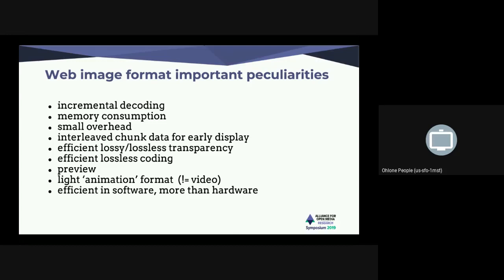We want to be efficient on alpha, because no device can capture alpha — it's a human process. We want to interleave alpha with YUV, and lossless coding is useful too — it's a replacement for PNG. We want preview support in the format, a very light animation format that only needs one buffer for decoding. Most importantly, we want to be efficient in software because hardware is not that useful for images — you can't parallelize decoding 20 images on a page. Hardware implementations don't handle partial data well. So we focus on software, incremental decoding, lightweight memory, and small overhead — that would be WebP V2.